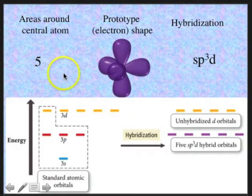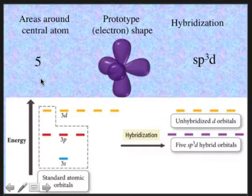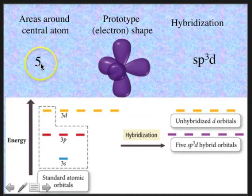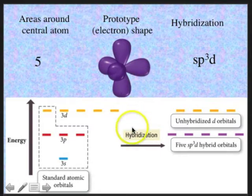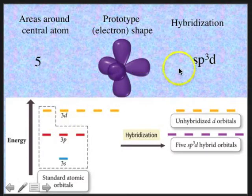Now we've also seen what happens with expanded octets. They do not occur in the second period because there are no d orbitals to become involved in the hybridization. But once you get beyond the second period — the third, the fourth, et cetera — you have d orbitals as well, and one or two of them can join the hybridization process. If we have five areas around the central atom, think of a triangular bipyramid — five balloons tied together. That occurs when a 3s orbital, three p orbitals, and a d orbital are all combined to form five new energetically equivalent sp3d hybridized orbitals.